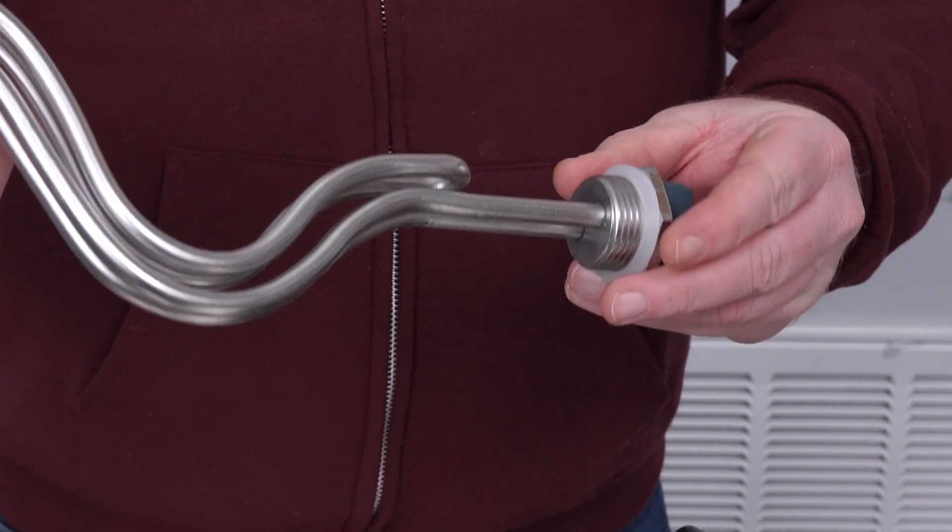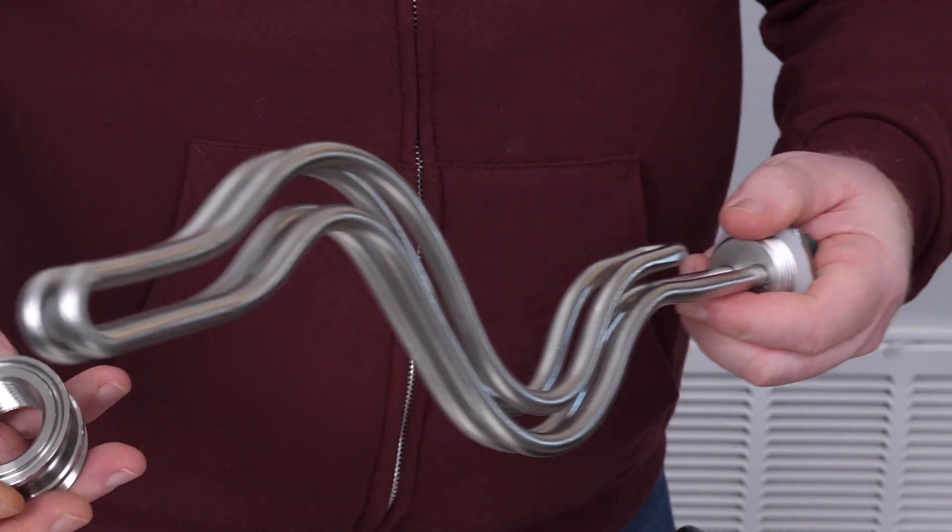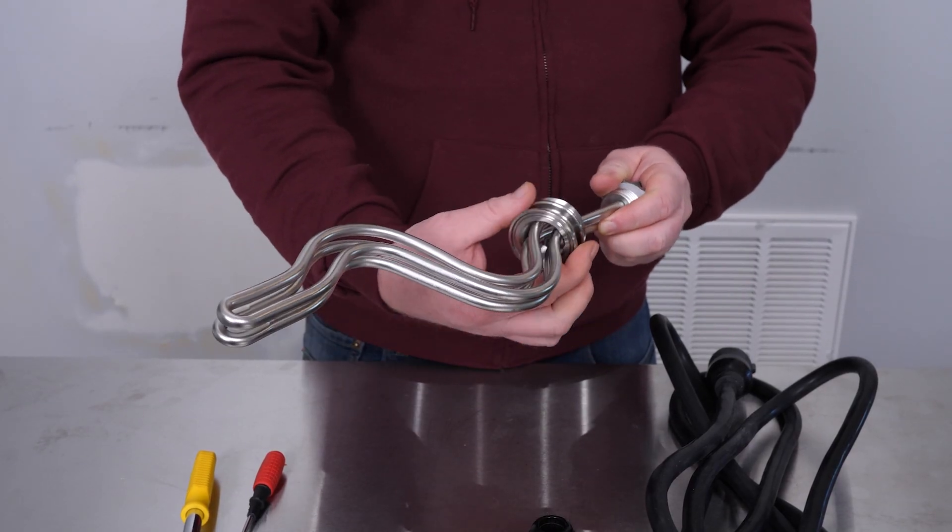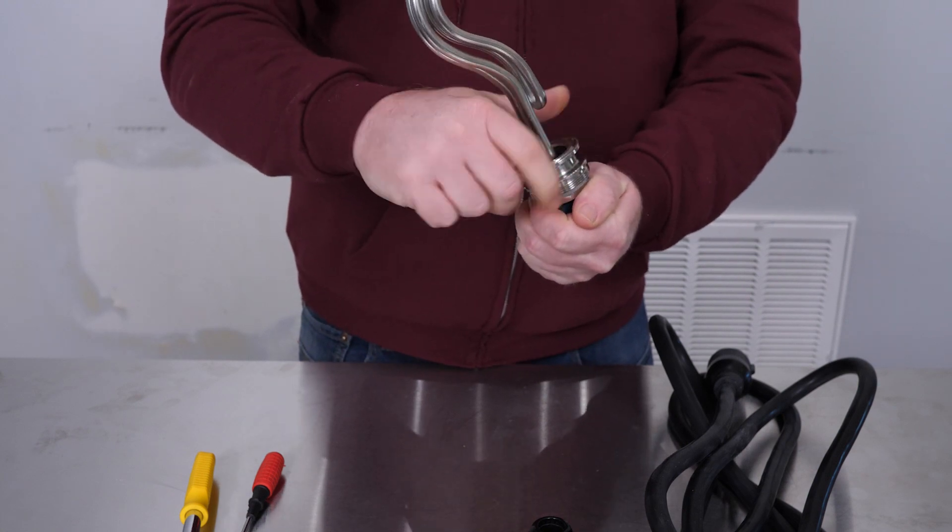If you do not have this gasket, get in touch with us, but they should all have a gasket. Slide it on with the ferrule forward, and that will screw onto the 5,500 watt element.